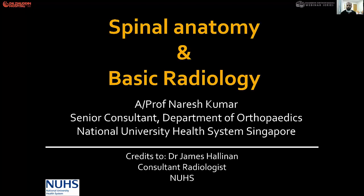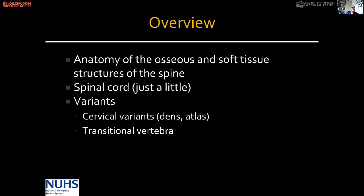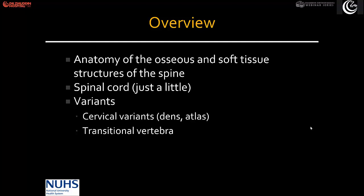Now we're talking about spine anatomy and basic radiology. We are looking at the spine anatomy of the osseous and soft tissues, the spine, spinal cord, and then we'll talk about some variants.